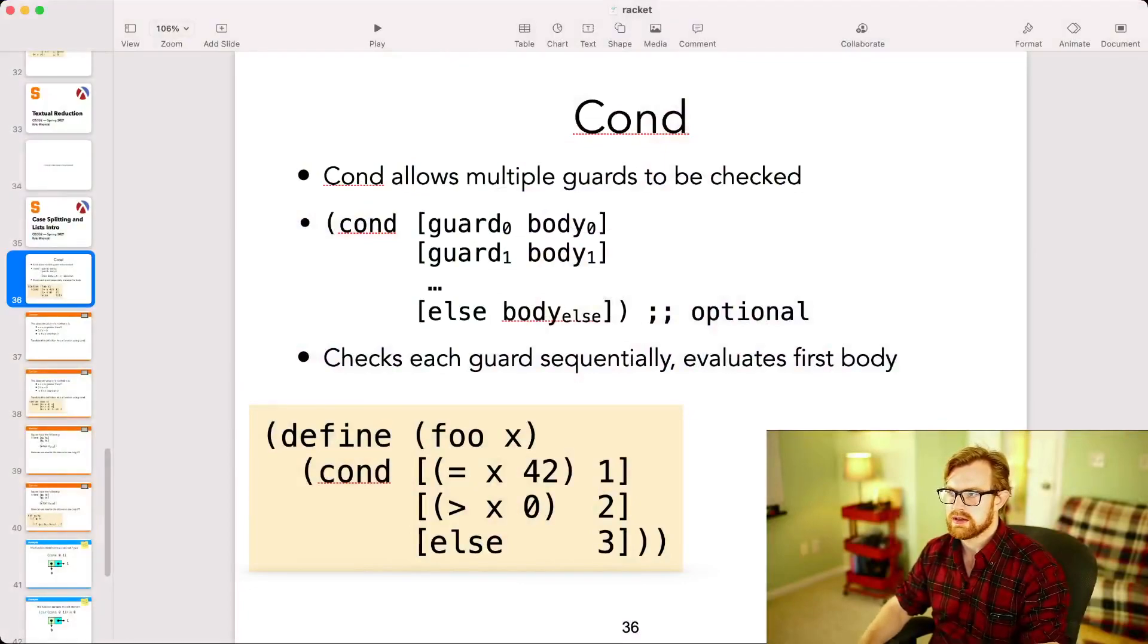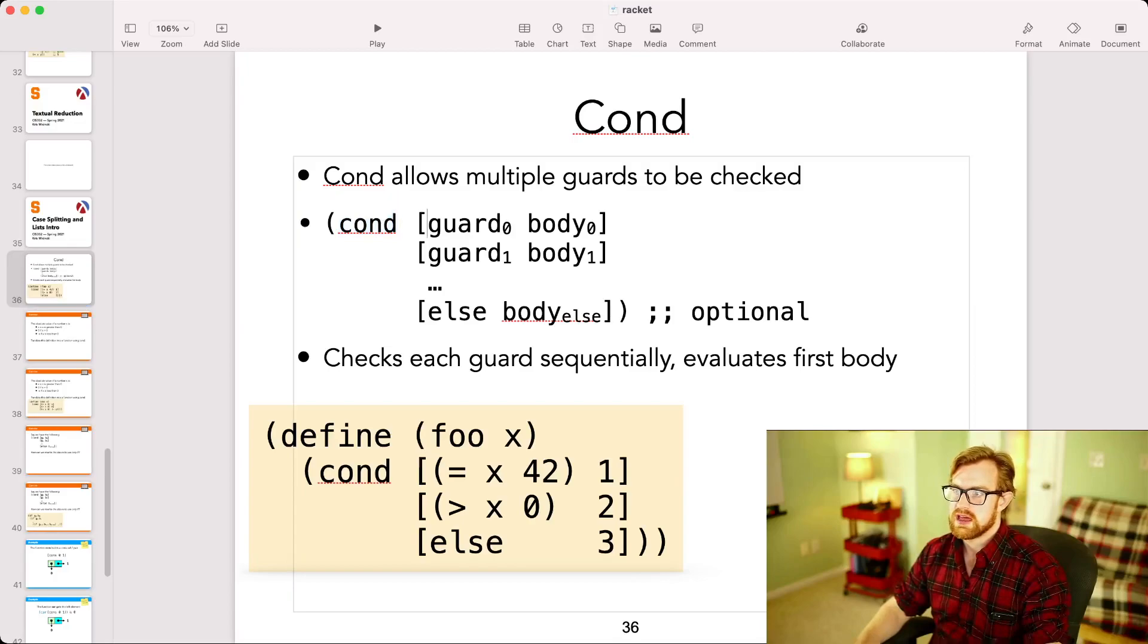Cond is a form in Racket that allows us to check multiple guards and then, based on the first one that fires, executes some piece of code. So cond begins with the word cond and then has a set of guards followed by bodies. There can be as many of these as you want, and it can optionally end with the word else, which would be the final guard, and will fire if none of the previous guards have fired.